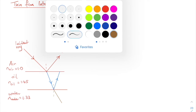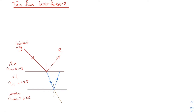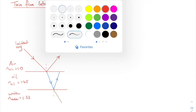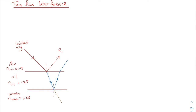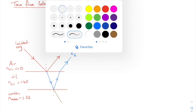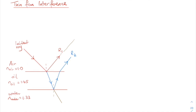Let's analyze at the first boundary. The light that is reflected is R1, but we notice there is also light reflected from the second boundary, which I call R2. This light will eventually meet at infinity — that's where our eyes are — and we see the interference between R1 and R2.